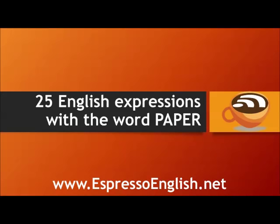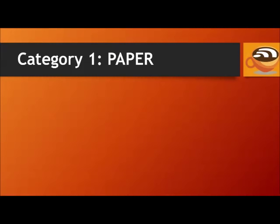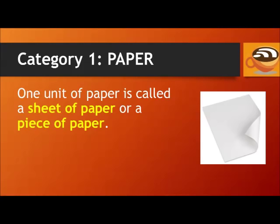25 English Expressions with the Word Paper from EspressoEnglish.net. Category 1 is paper, the material. One unit of paper is called a sheet of paper, or a piece of paper.